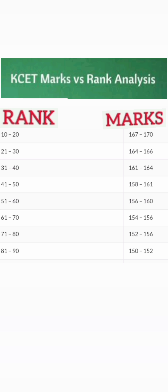If your marks are less than 170, say between 150 to 170 marks, even at the 150 level you are still going to get under 100 ranks. So 81 to 90 rank at above 150 marks. If your marks are 152 onwards your rank will be under 70. If your marks are around 156 your ranks will be 50 to 60. At 160 marks it will be 31 to 40 ranks, and at 167 to 170 marks it will be under 20 ranks.